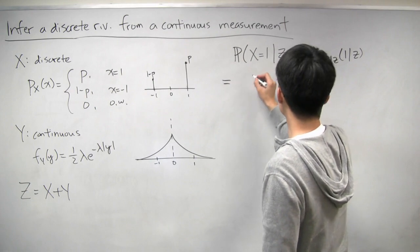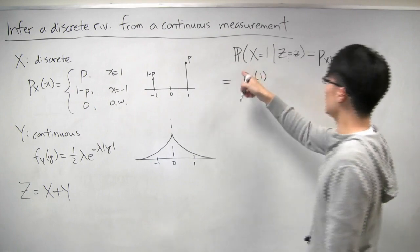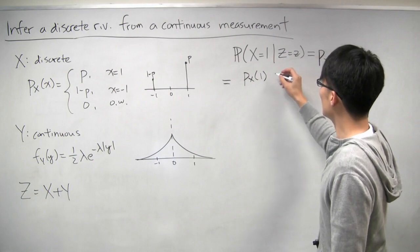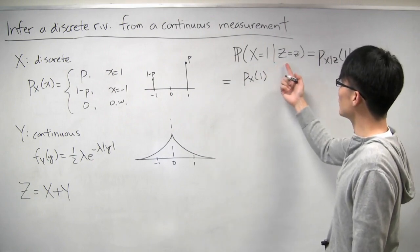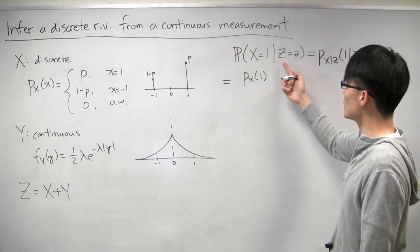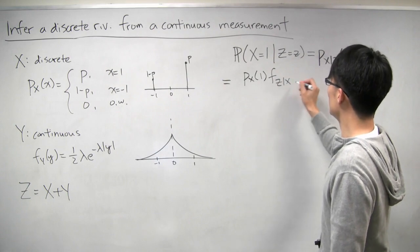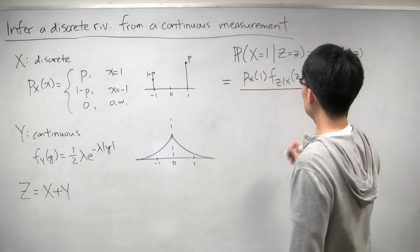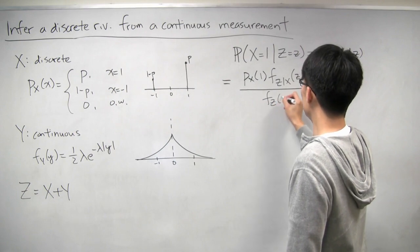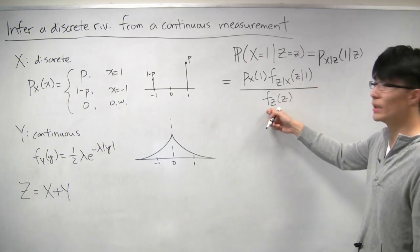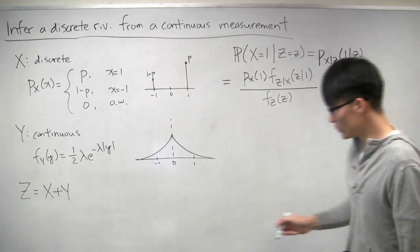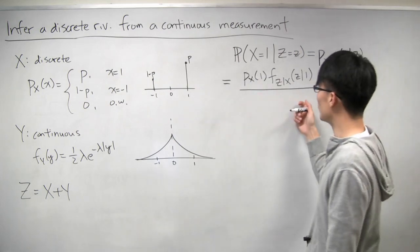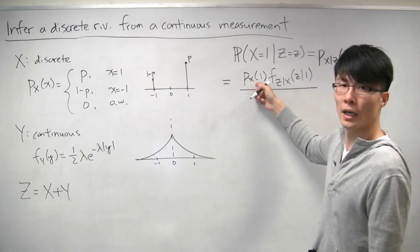The formula is: the PMF of x evaluated at 1, times the conditional PDF of z given x — since z is continuous — evaluated at little z conditioned on x being 1, divided by the marginal PDF of z. We can rewrite the denominator using the law of total probability. One of those terms is exactly the same as the numerator, and the other term corresponds to x being equal to negative 1.